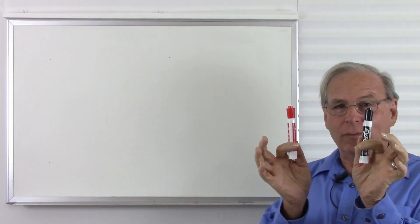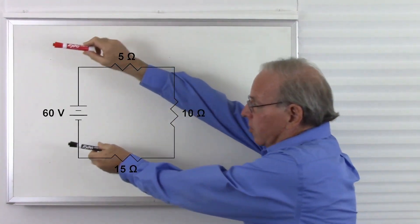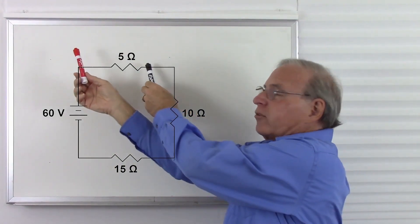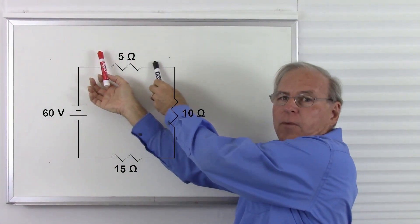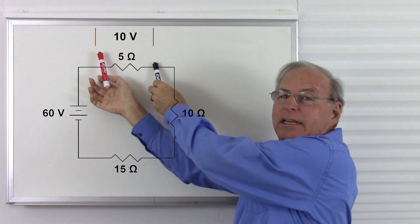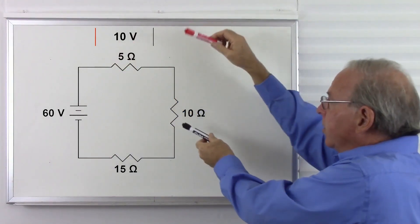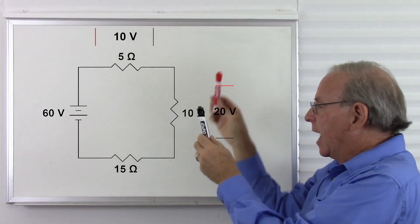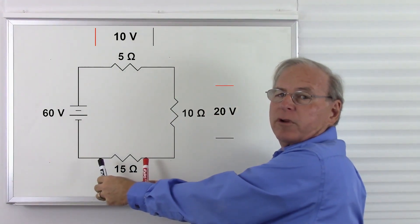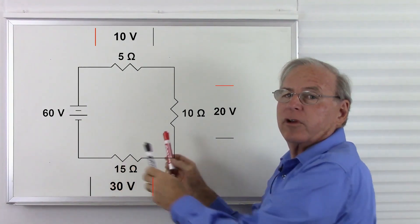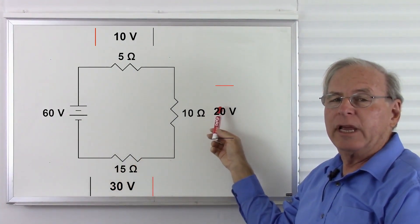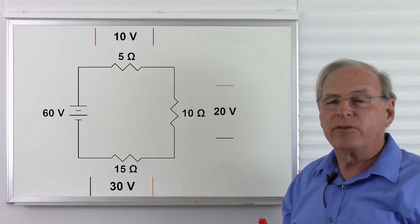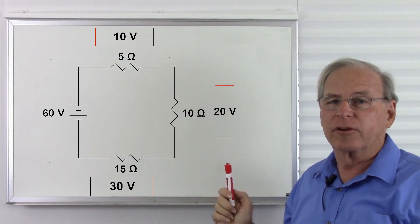I have my voltmeter here. We put it across the battery, and of course we see 60 volts. Now we put it across the 5 ohm resistor and we see 10 volts. We put it across the 10 ohm resistor and we see 20 volts. Now we put it across the 15 ohm resistor and we see 30 volts. 30 plus 20 plus 10 equals 60 — there we see Kirchhoff's voltage law being manifested in this circuit.